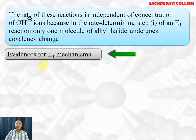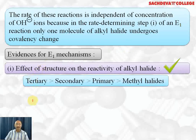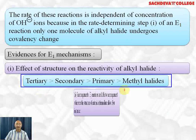Let's take up evidence for the E1 mechanism. The effect of structure on the reactivity of alkyl halide shows that tertiary is more reactive than secondary, which is more reactive than primary, which is more reactive than methyl halide. This clearly shows that a carbocation is formed, because tertiary carbocation is most stable and methyl carbocation is least stable.